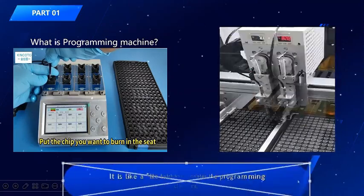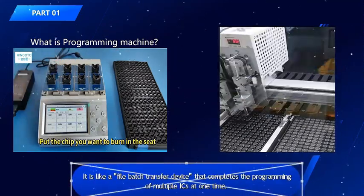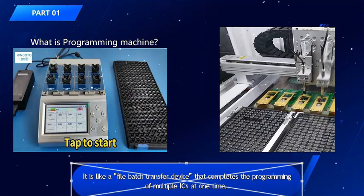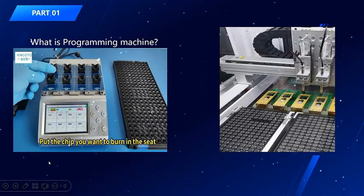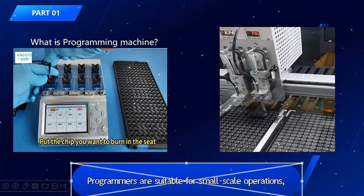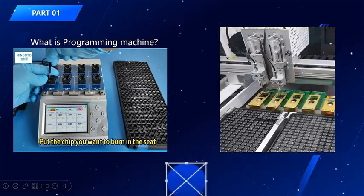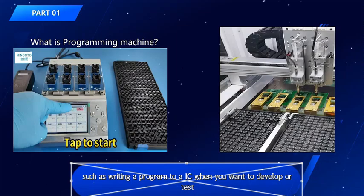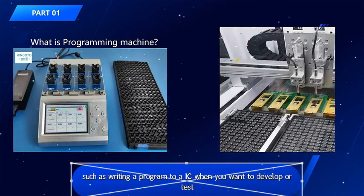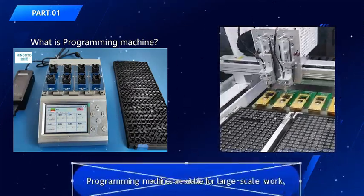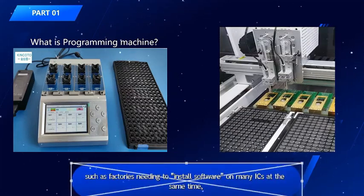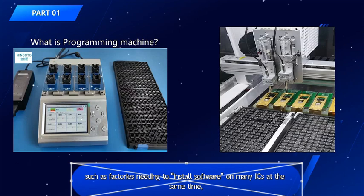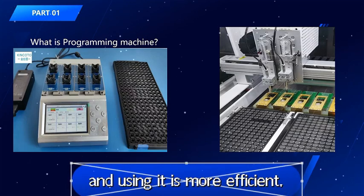It is like a file-batch transfer device that completes the programming of multiple ICs at one time. To sum up, programmers are suitable for small-scale operations, such as writing a program to an IC when you want to develop or test. Programming machines are suitable for large-scale work, such as factories needing to install software on many ICs at the same time, and using it is more efficient.